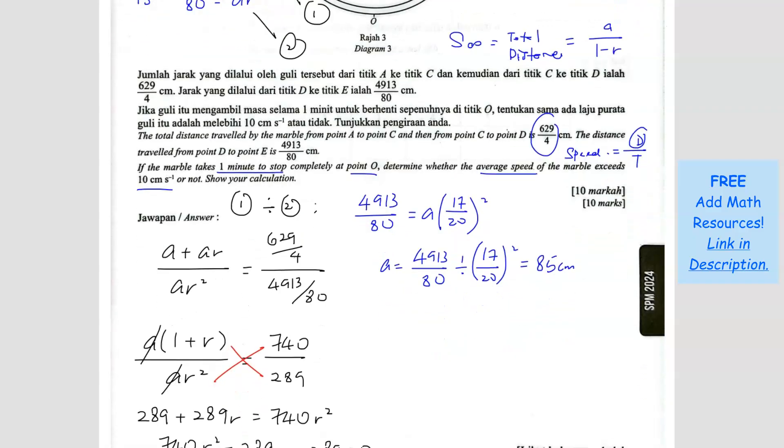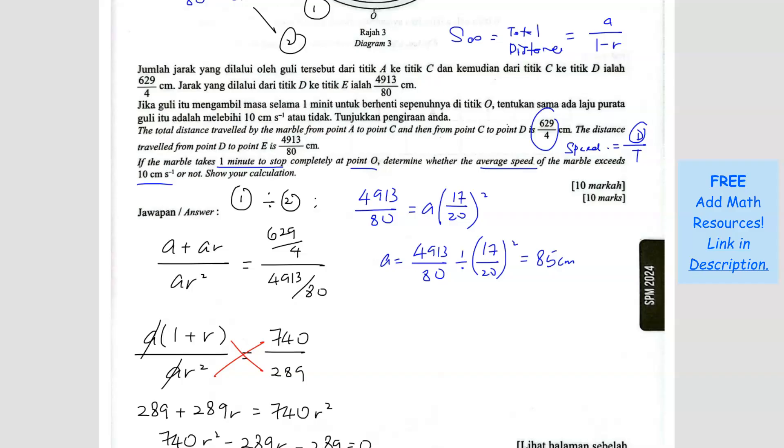The question now wants you to find the total distance. Total distance equals the sum of infinity. So sum of infinity equals A over 1 minus R. A is 85 over 1 minus R, R is 17 over 20. Key this in your calculator, you get 1700 over 3. I'm not going to use decimal because I want as accurate as possible. This will be the total distance in cm.